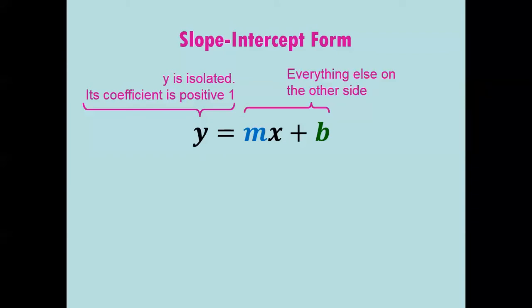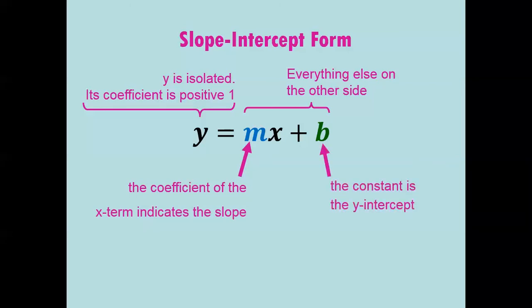We're going to first quickly review slope-intercept form. y equals mx plus b, you're all very familiar with it. Note that the y is isolated, and its coefficient is positive 1, and then everything else is on the other side. The coefficient of the x term indicates the slope of the line, and the constant is the y-intercept.